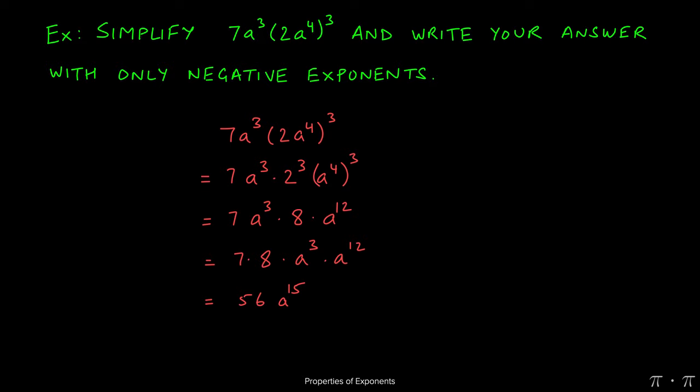We can use the negative power rule to move the 56 and the a to the fifteenth to the denominator and when we do we're going to have a one left in the numerator.